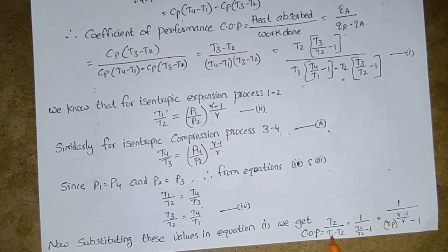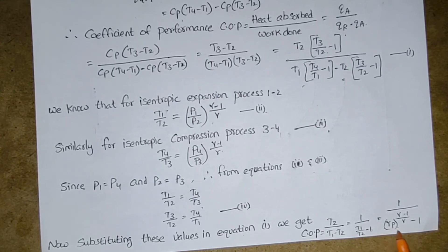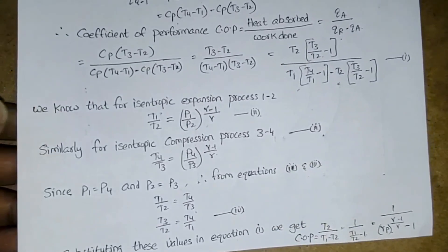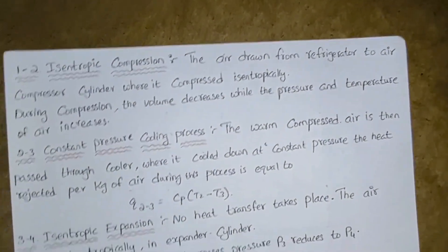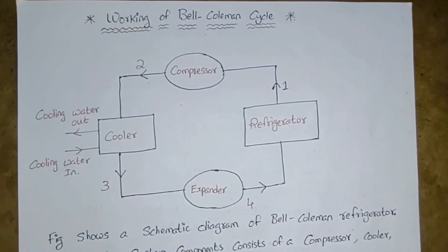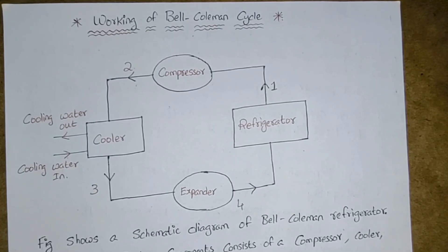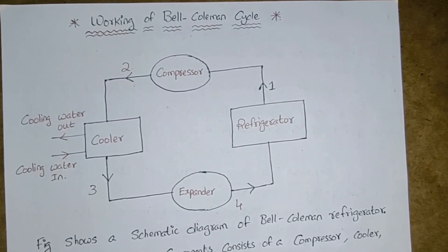Substituting these values, the coefficient of performance simplifies to 1 / (T1/T2 − 1). So try this derivation in your exam. Whether it is for 15 marks or otherwise, all these details you have to explain in your answer sheet, then only you will get good marks.